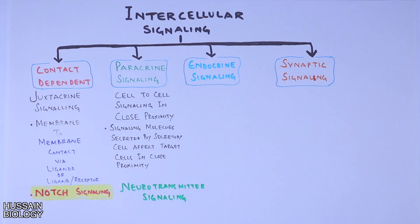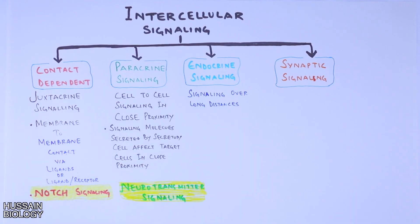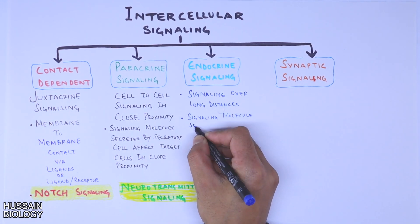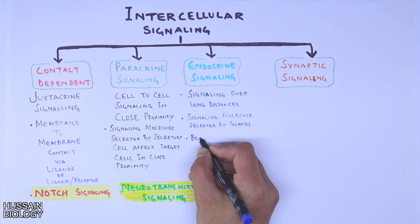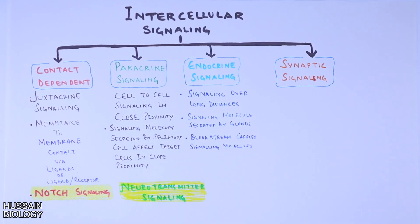Then there is endocrine signaling. It is signaling between cells over long distances, and involves a medium through which signaling molecules travel to the target site. The signaling molecules are mostly secreted by glands in the form of hormones, and these hormones are then carried to the target site through the bloodstream. The example for this signaling is hormones.